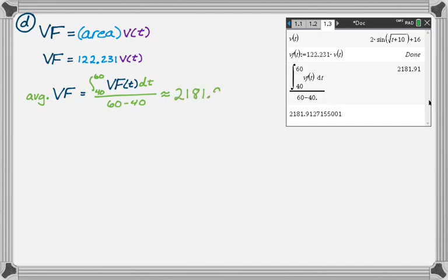That's approximately—this is a calculator thing, so I punched it in. I got 2181.913. And I know that that's in cubic feet per minute. Now, the problem said that if the average value on any 20 minute period exceeds 2100, water will have to be diverted. And the question is, do we have to divert water?